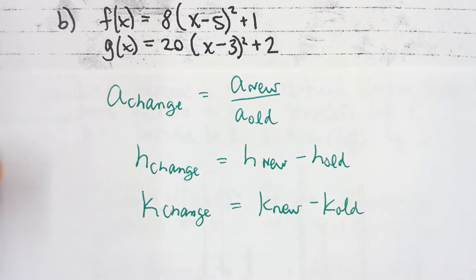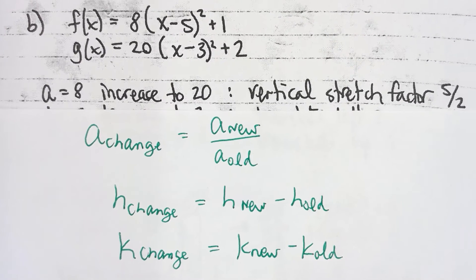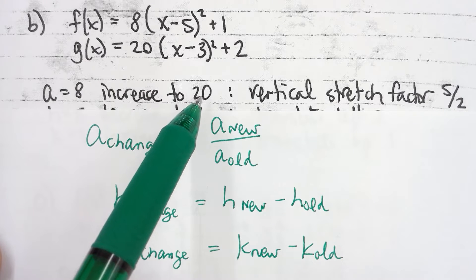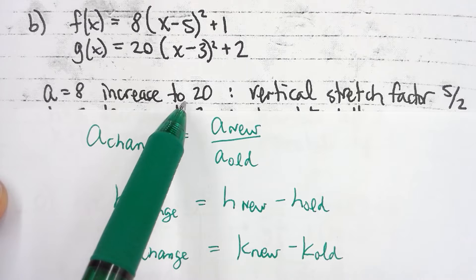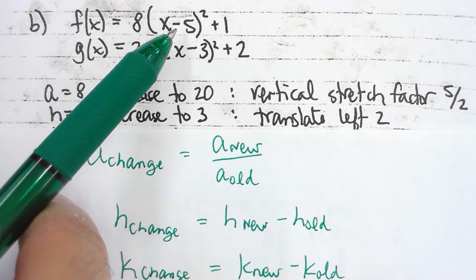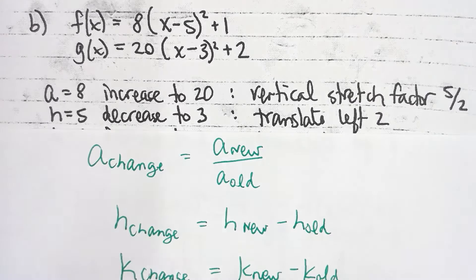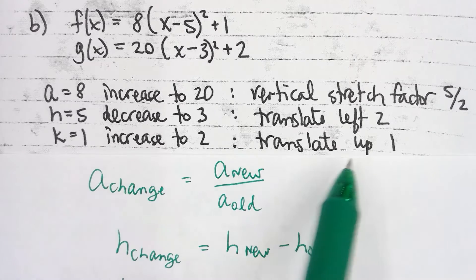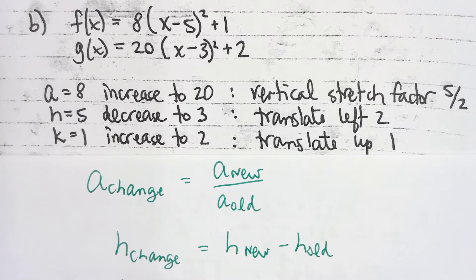Going from an 8 to a 20, we're increasing a, giving a vertical stretch by a factor of 5 over 2. My h went from positive 5 to positive 3 — remember the h uses the inverse sign — so h decreased by 2: translate left 2. My k went from positive 1 to positive 2, increasing by 1: translate up 1.